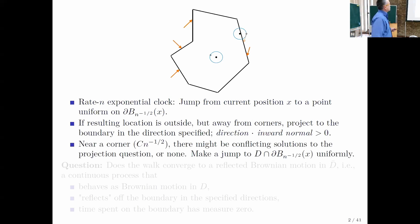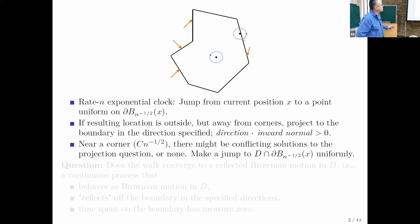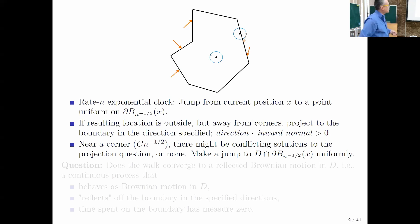When we are close to the corners, the question of projecting may have different solutions depending on which face you're using — it could have multiple solutions, but it could also have no solution. In that case, you can do anything reasonable that stays local. For concreteness, let's say that you make a jump in a direction chosen uniformly at random in the directions where you remain in the domain.